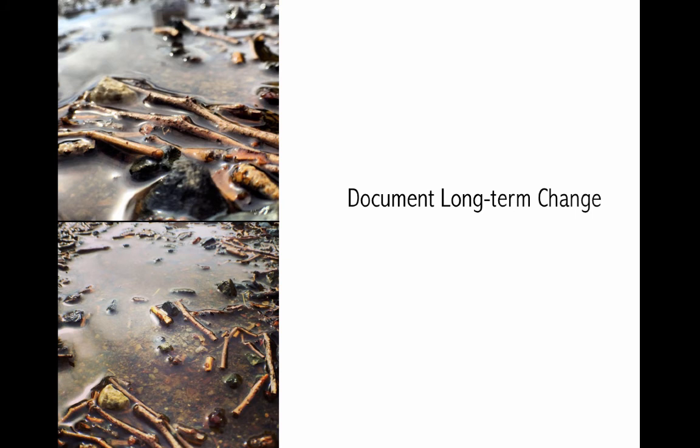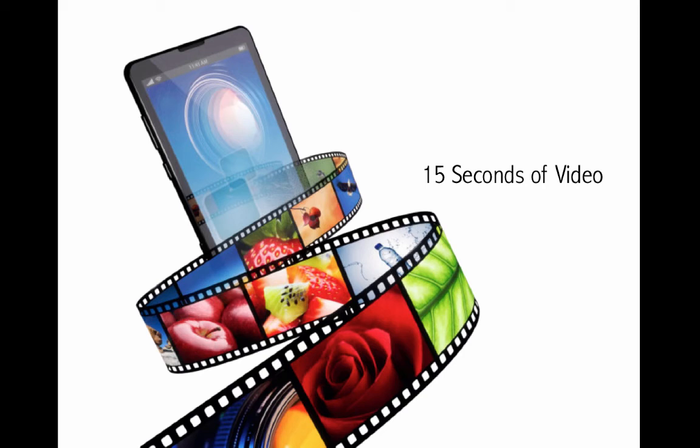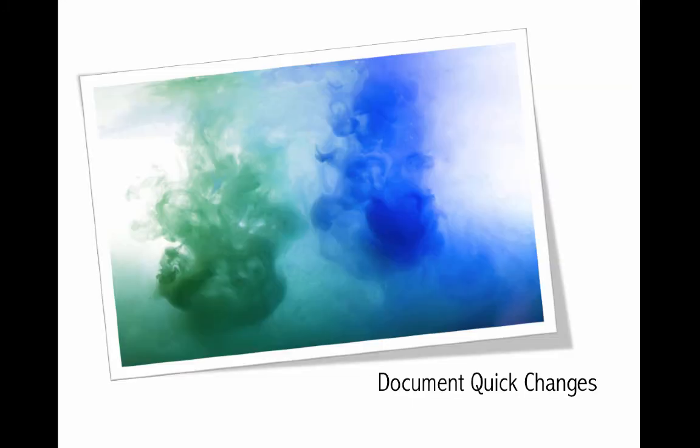Images are a great way to document change, especially long-term change — that works really well with many science experiments that don't happen overnight. One thing people don't realize is that Instagram also has video included — you get 15 seconds of video and you can apply effects to that as well. So while images work great for documenting long-term changes, video is a great way to capture quick changes.